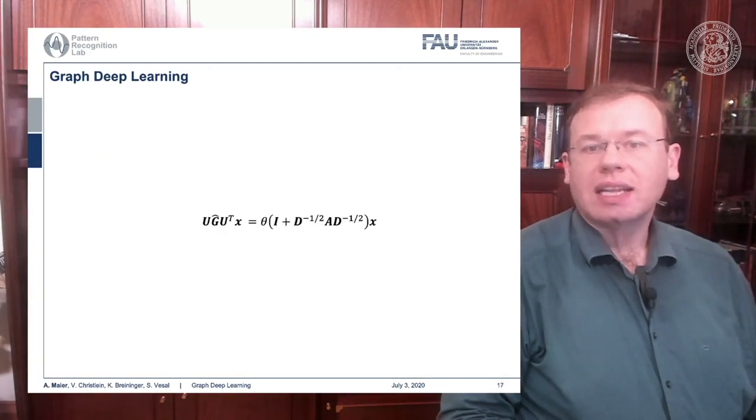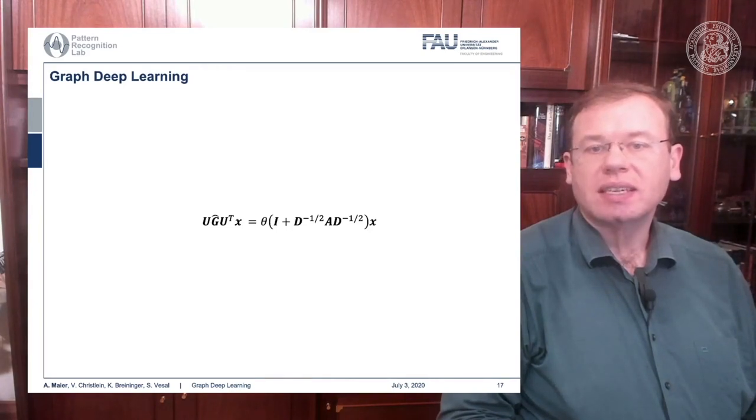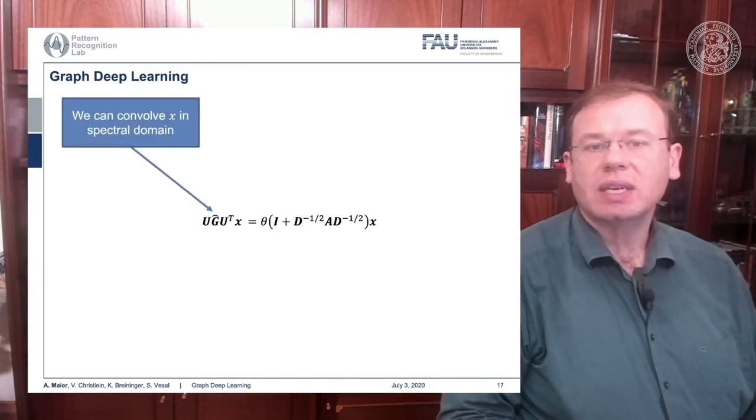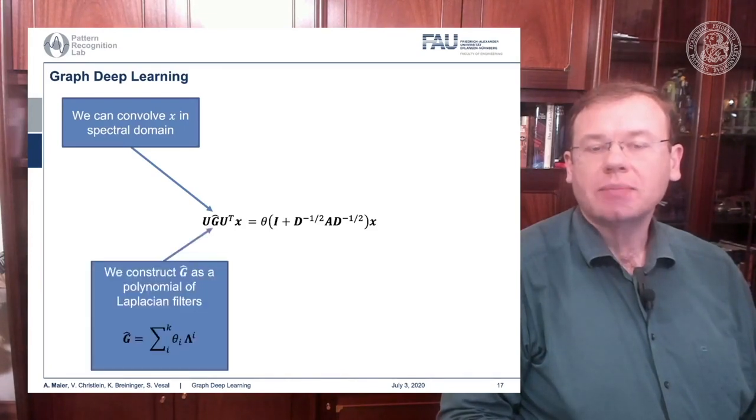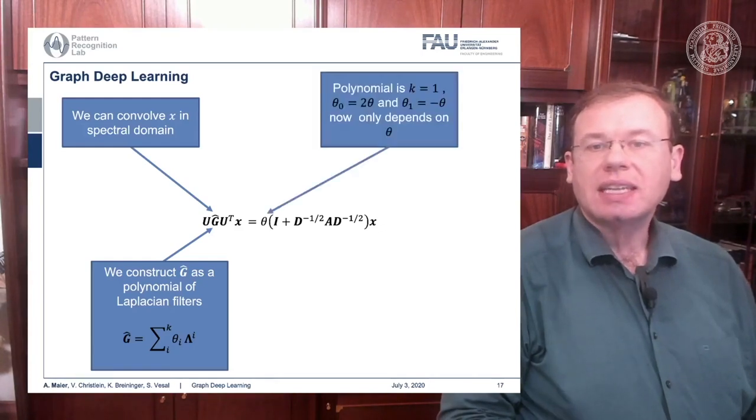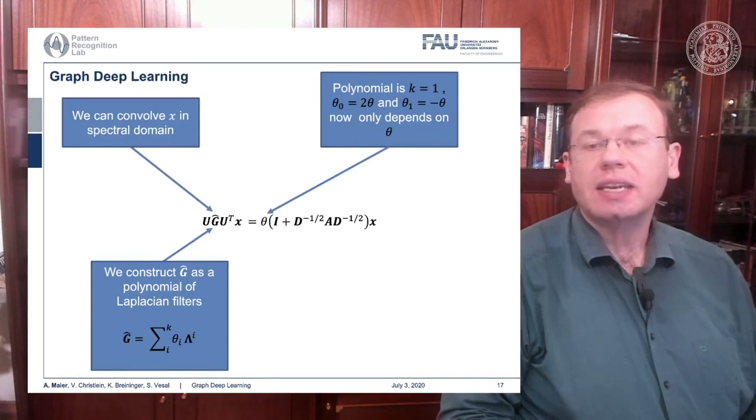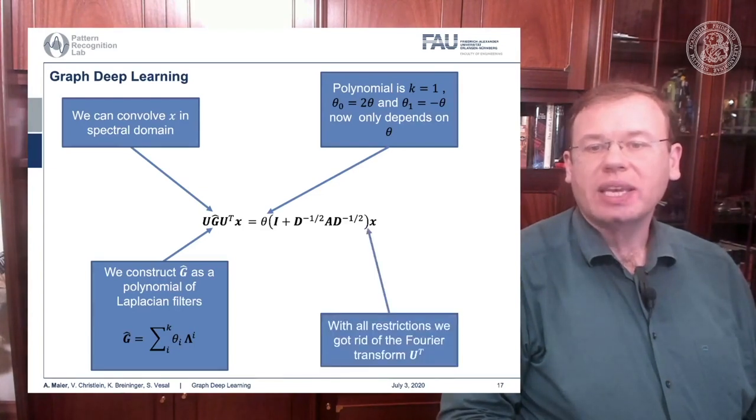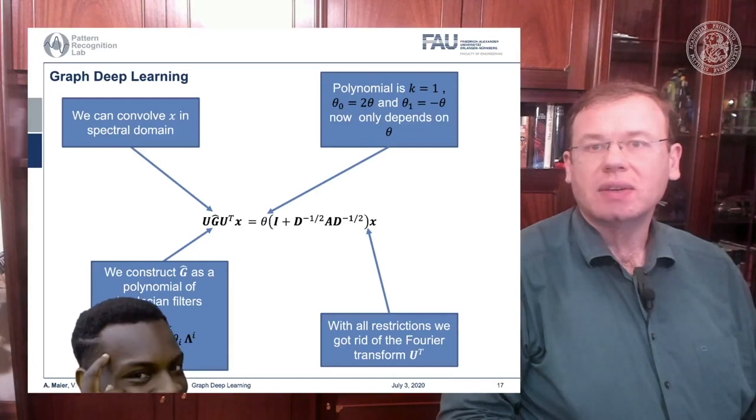Now let's analyze this term. We can see this identity on the left-hand side. We can convolve x in spectral domain and construct G hat as a polynomial of Laplacian filters. With a particular choice k equals 1, theta_0 equals 2 theta, and theta_1 equals minus theta, this term suddenly only depends on the scalar value theta, and with all these tricks we got rid of the Fourier transform U^T.